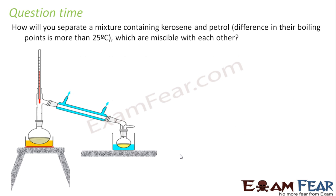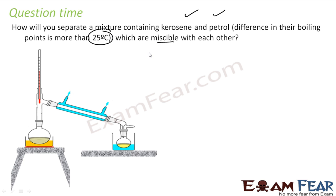The question is: how will you separate a mixture containing kerosene and petrol? The difference in the boiling point is less than 25 degrees Celsius and they are miscible with each other — that means they are mixed with each other. So I have a sample which has kerosene and petrol. How will I separate?